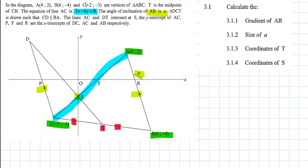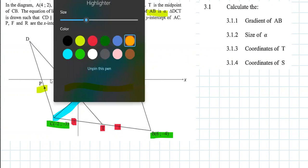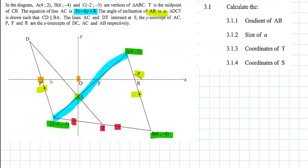The Y-intercept of AC, which is the Y-intercept of the blue line AC, and P, F, and R are X-intercepts. That's all our information, no extra information has been given.